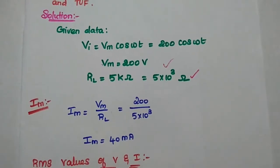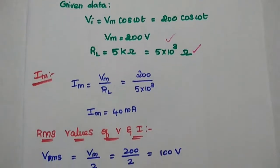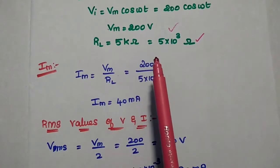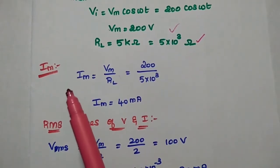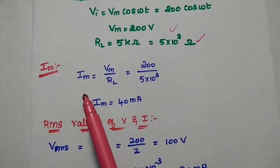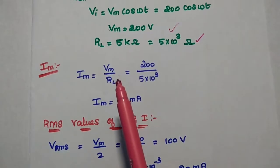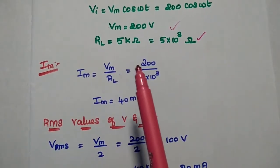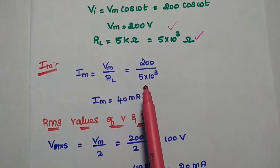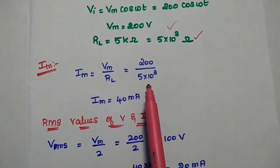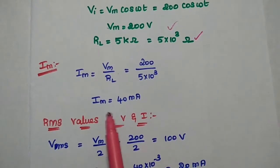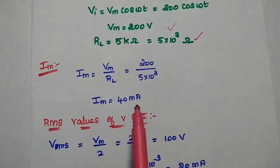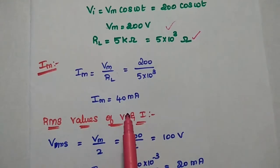The maximum values are: Vm = 200 V, and Im = Vm/RL = 200 / (5 × 10³) = 40 mA.